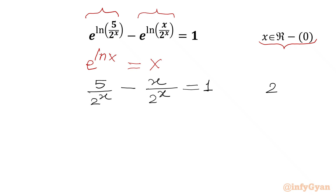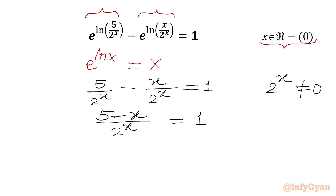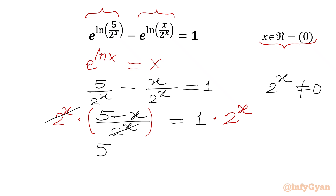For real x, 2 raised to the power x cannot be equal to 0. So I can write (5 - x) over 2^x equal to 1. Now we will multiply both sides by 2^x, since 2^x is non-zero. We cancel 2^x from numerator and denominator of the LHS and get 5 - x = 2^x.